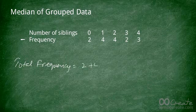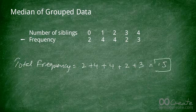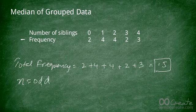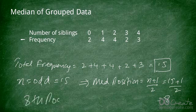The first thing to do is find the total number of students — the sum of all frequencies — which gives us the total frequency: 2 + 4 + 4 + 4 + 2 + 3 = 15. Since 15 is odd, we can find a single median value. With n = 15, the median position is (15 + 1) / 2 = 8. So we need to find the 8th position.